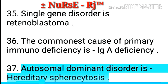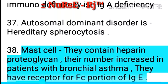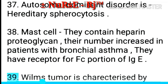Point 38: Autosomal dominant disorder is hereditary spherocytosis. Point 39: Mast cells — they contain heparin proteoglycan, their number increases in patients with bronchial asthma, and they have receptor for the Fc portion of IgE.